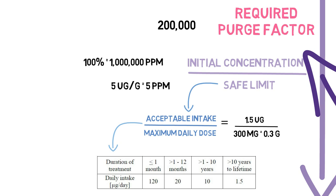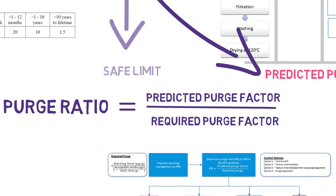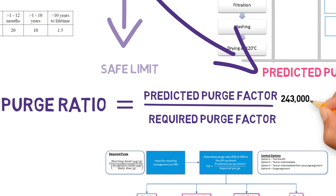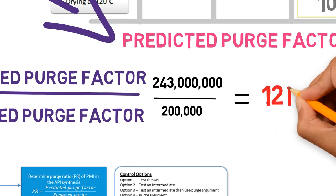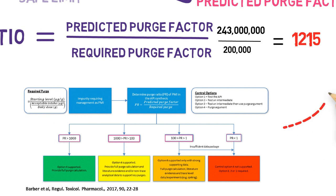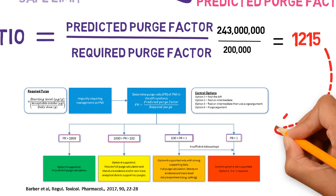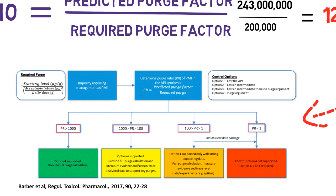And what is the purge ratio? The predicted purge factor divided by the required purge factor: 243 million divided by 200,000 equals 1,215. This means that the process can purge the impurity 1,215 times more than it would be necessary. Since the purge ratio is higher than 1,000, option 4 can be justified with no need for further testing.